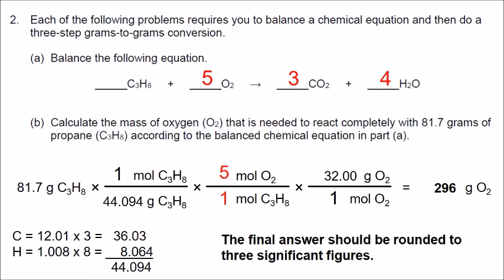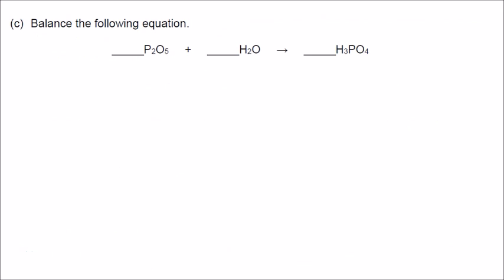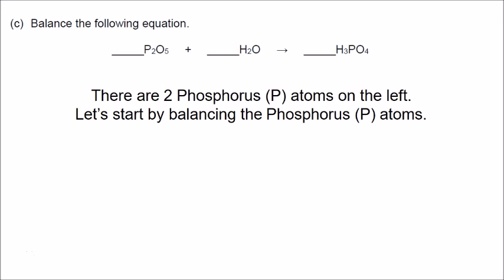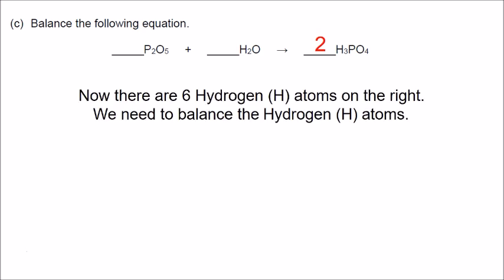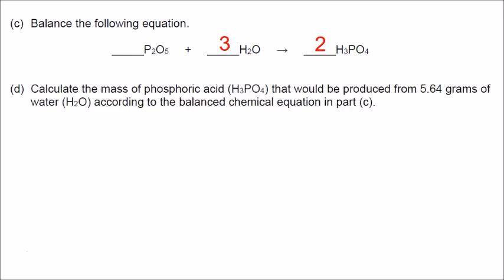Part C: balance this equation. There are 2 phosphorus atoms on the left, so we put a 2 in front of H3PO4. Now we have 6 hydrogen atoms on the right, so we put a 3 in front of water to balance the hydrogen atoms. We have 5 plus 3 equals 8 oxygen atoms on the left and 8 on the right, so the equation is completely balanced.